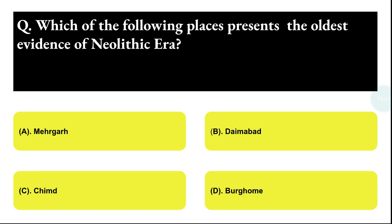Next question: which of the following places presents the oldest evidence of the Neolithic era? Option A: Mehrgarh, Option B: Daimbat, Option C: Jim, Option D: Burzahom. The correct answer is option A, that is Mehrgarh.